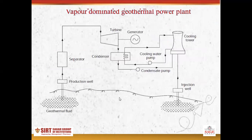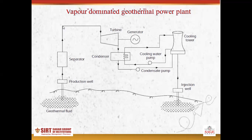Here you can see the schematic diagram of a vapor dominated geothermal power plant. The dry steam tapped from the well is collected and filtered in the centrifugal separator to remove the abrasive particles. This steam is then passed through the pipes to run the turbine.